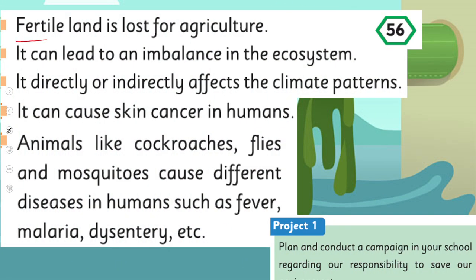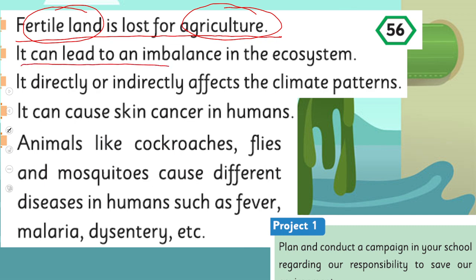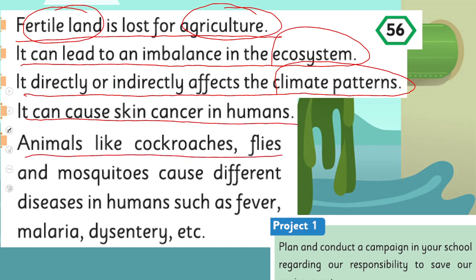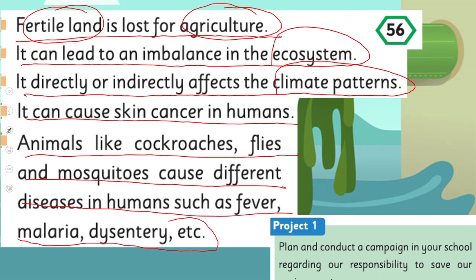Fertile land is lost for agriculture when pesticides and herbicides are implemented. It can lead to an imbalance in the ecosystem and it directly or indirectly affects the climate. It can cause skin cancer in humans. Animals like cockroaches, flies, and mosquitoes cause different diseases in humans such as fever, malaria, dysentery, etc.